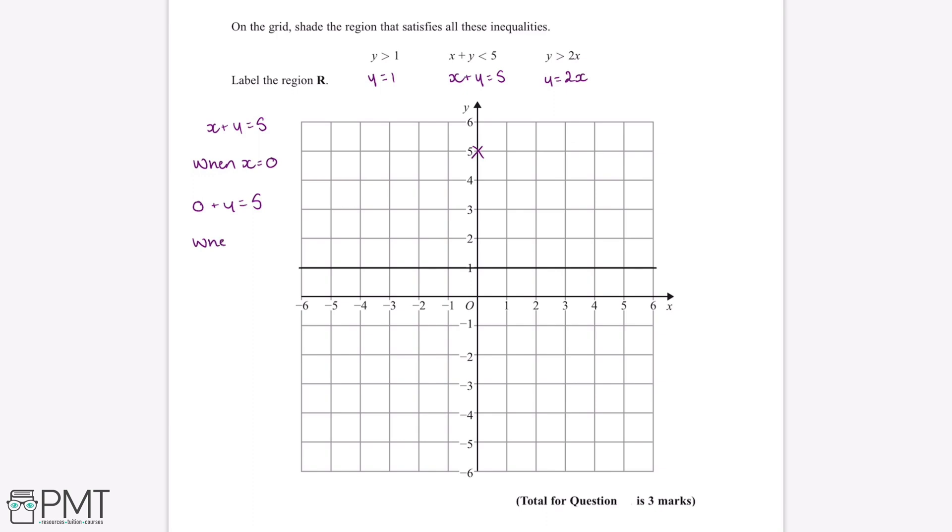And we can do the same for when y will be equal to 0. So when y equals 0, x plus 0 will be equal to 5. So we can mark this point on the graph. So we now have two points, so we can draw a straight line between these two points.